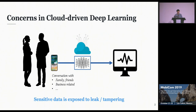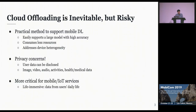Suppose that you are using an intelligent mobile application which is powered by deep learning. For example, we can think about an application that listens to my conversation and corrects my bad habits. This kind of application will monitor my conversation with my friends and families. And what if this data is sent to the cloud? My personal and sensitive data will be exposed to a leak or tampering. So cloud offloading is inevitable, but it is very risky.